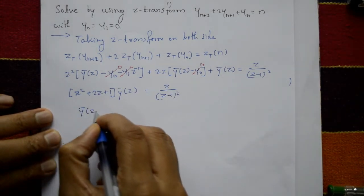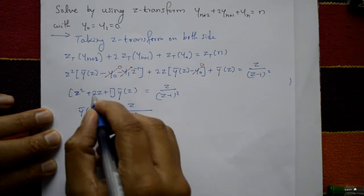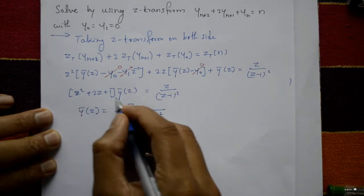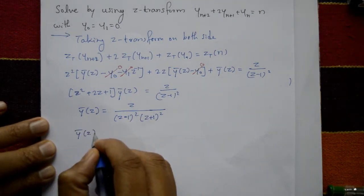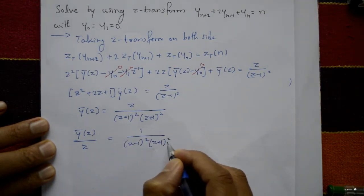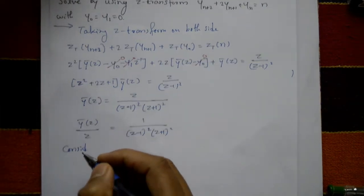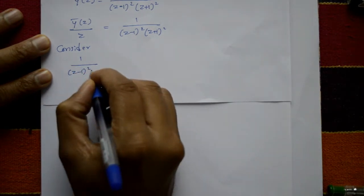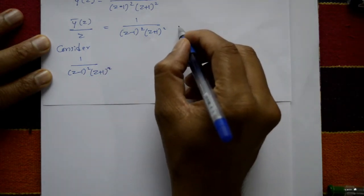Therefore Y-bar(z) = z / [(z−1)²·(z+1)²], since z² + 2z + 1 = (z+1)². Dividing both sides by z: Y-bar(z)/z = 1 / [(z−1)²·(z+1)²]. Consider this as equation number 1.